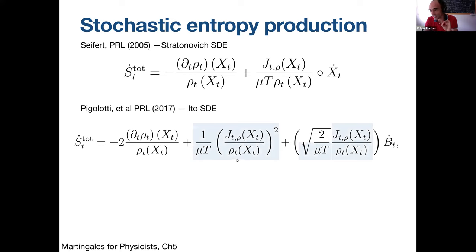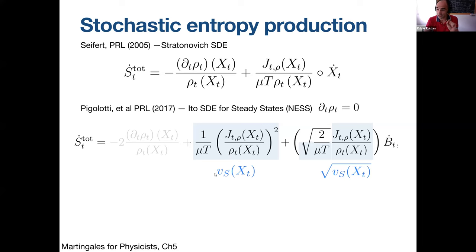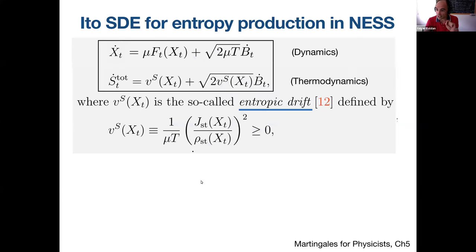This Itô form has a very particular structure: two terms that look similar — one is the square of the noise amplitude. In a non-equilibrium stationary state, ∂ₜρ = 0, so the first term vanishes. The change of total entropy in a small interval has a beautiful form with a drift term and an Itô noise term with the same amplitude, where this involves the current and the density at time t. Integrating these equations gives the fluctuations of entropy production.